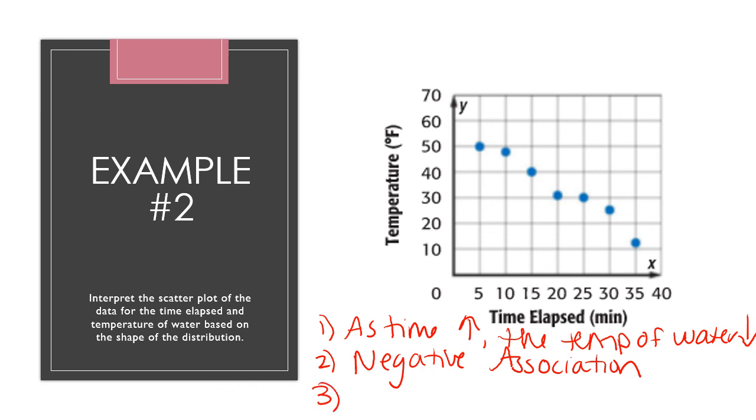Last thing we need to say, do you have any clusters or do you have any outliers? In this one, there's no data points where they're all clumped together and there's no data points where it's either higher or lower. So simply we would write no outliers, no clusters. And that is it. You've taken the time to interpret the scatter plot.